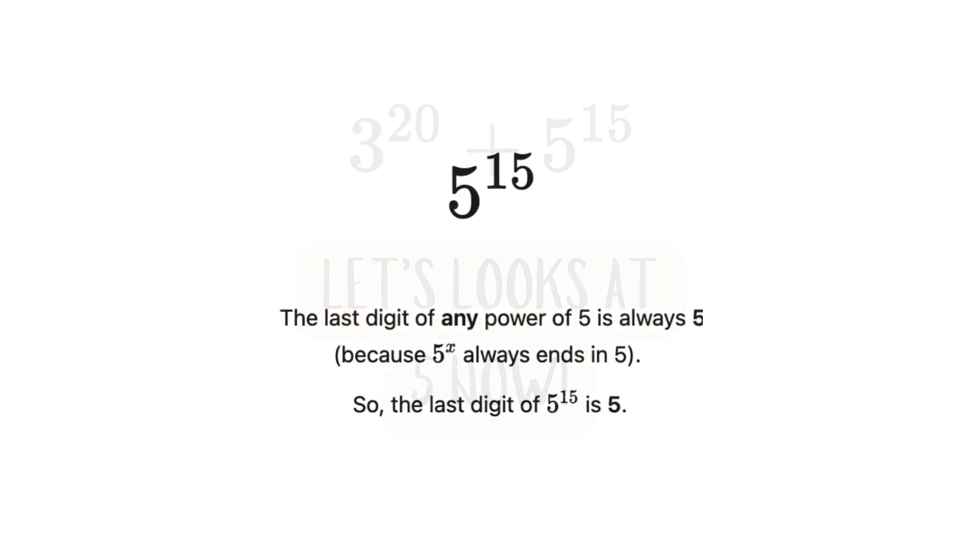Now let's look at 5. The last digit of any power of 5 is always 5, because 5 to the power of x always ends in a 5. That's just a pattern that keeps going on. So the last digit of 5 raised to the power of 15 will also be 5.